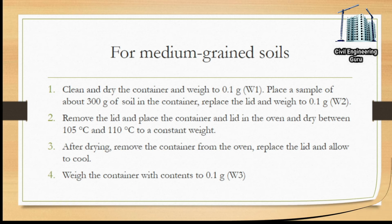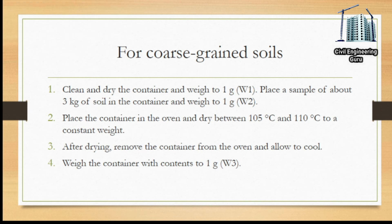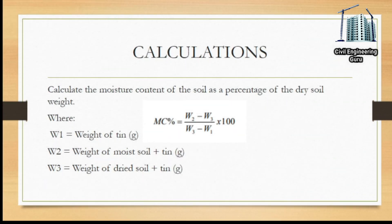Procedure for coarse grained soils: clean and dry the container and weigh to 1 gram (W1). Place a sample of about 3 kilograms of soil in the container and weigh to 1 gram (W2). Place the container in the oven and dry between 105°C and 110°C to constant weight. After drying, remove from the oven, allow to cool, and weigh to 1 gram (W3).